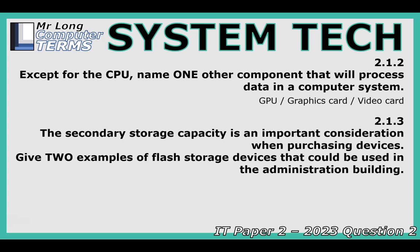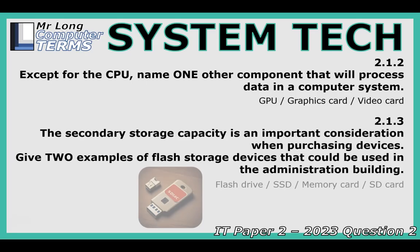Secondary storage capacity is important. Flash storage — like SSDs, flash drives, and memory cards — uses chips rather than moving parts like old hard drives, so data access is way faster. Think near-instant boot times and app opening with an SSD. No moving parts also means they're tougher, less likely to break if bumped, and more energy efficient. For new admin computers, SSDs would make a huge difference in perceived speed. USB flash drives and SD cards are handy portable versions.